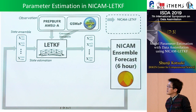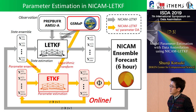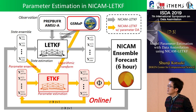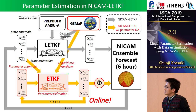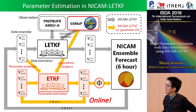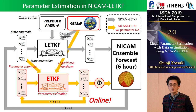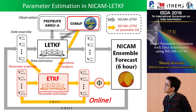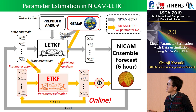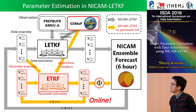For parameter estimation, we add one part to update the model parameter. The data assimilation considers the state ensemble as state variables, but we also consider the parameter as a state variable in the data assimilation cycle. Each ensemble member has a different parameter, meaning we perform the ensemble forecast with each member having a different parameter, resulting in different atmospheric states or precipitation fields. For this first study, we assimilate the GSMaP, which is a satellite-sensed precipitation dataset, to update the model parameter simultaneously with the state update cycle.